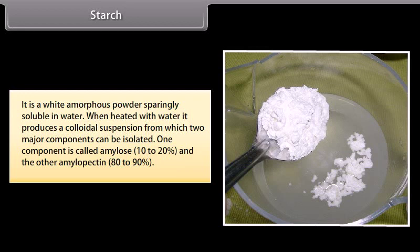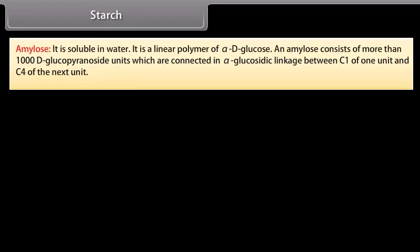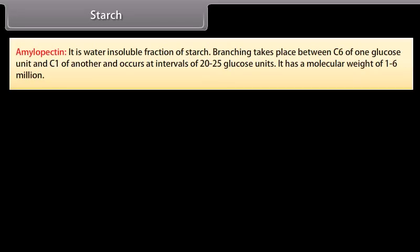Starch is a white amorphous powder, sparingly soluble in water. When heated with water it produces a colloidal suspension from which two major components can be isolated: amylose and amylopectin. Amylose is soluble in water; it is a linear polymer of alpha-D-glucose consisting of more than 1000 alpha-D-glucopyranose units connected by alpha-1,4-glucosidic linkage between C1 of one unit and C4 of the next. Amylopectin is the water-insoluble fraction; branching occurs between C6 of one glucose unit and C1 of another at intervals of 20–25 glucose units, with a molecular weight of 1 to 6 million.